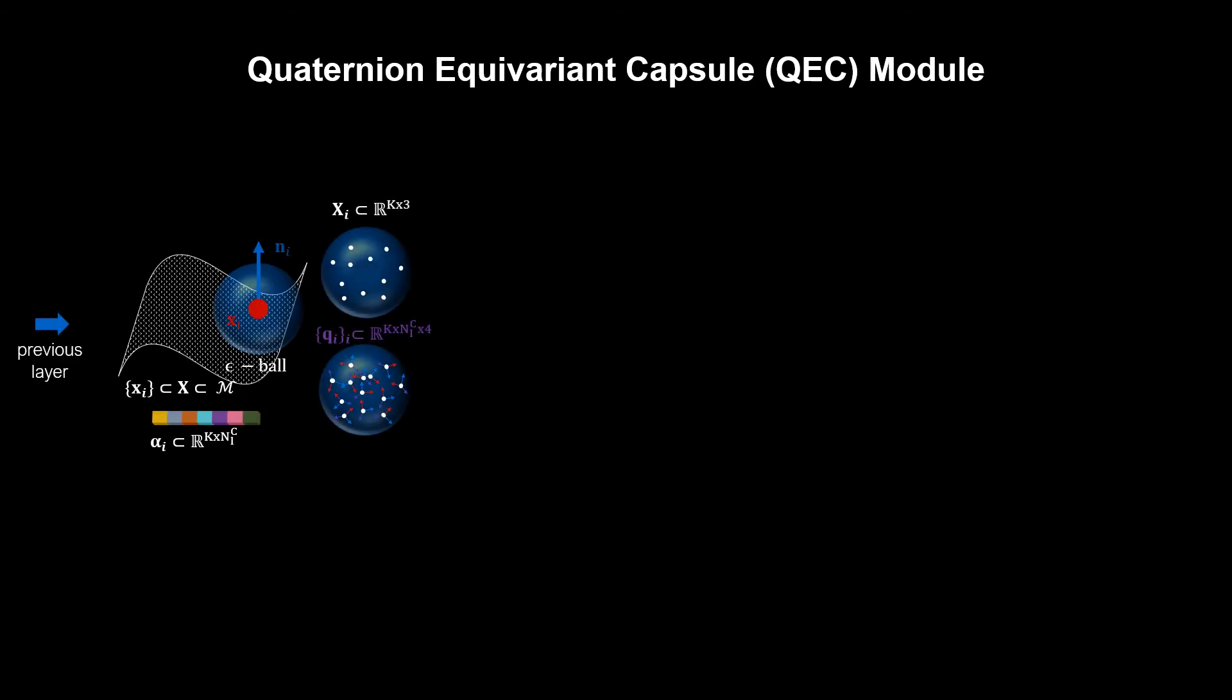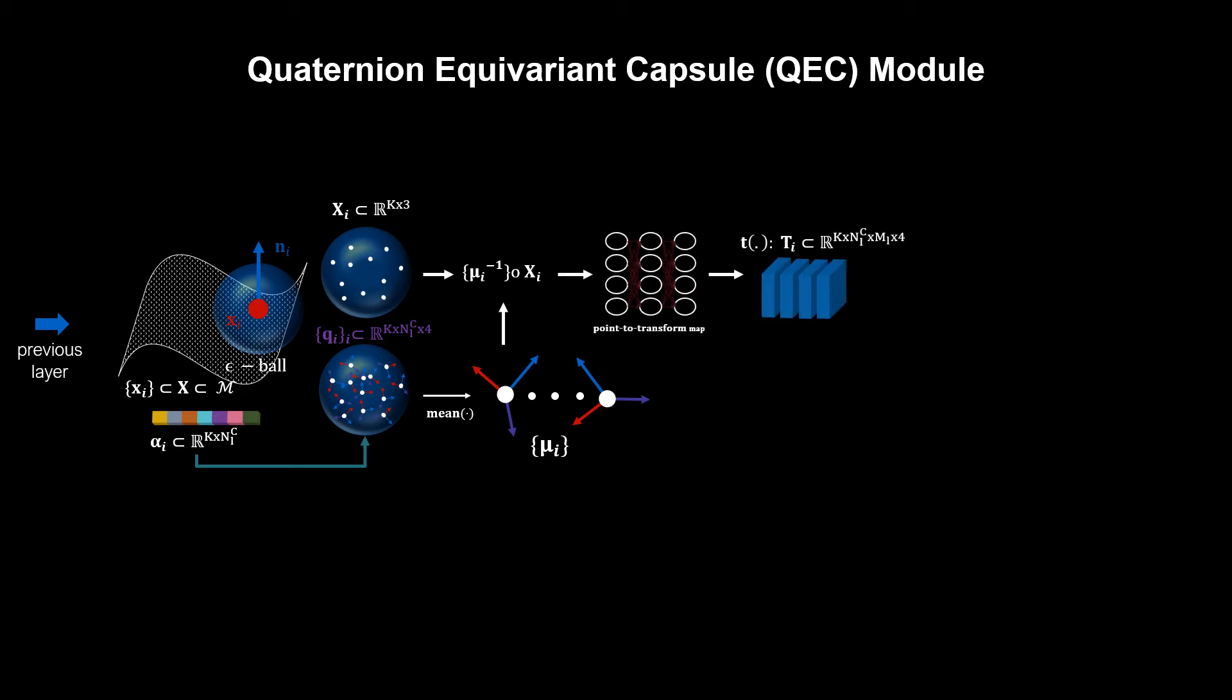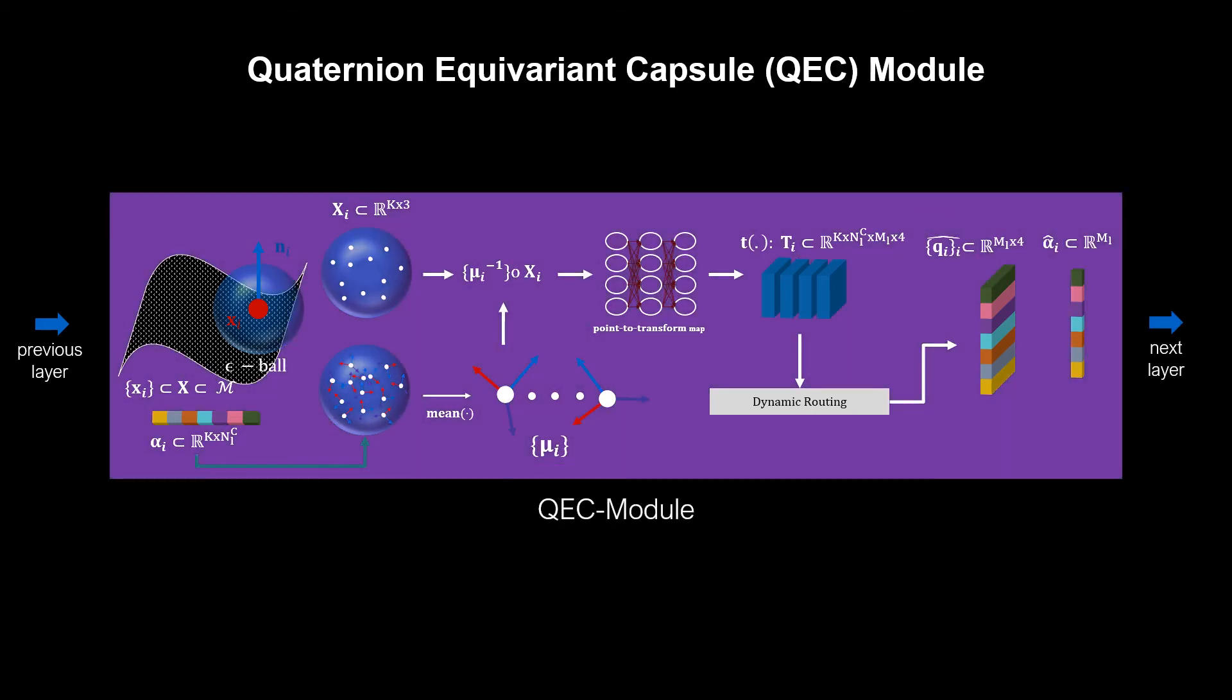Our quaternion-equivariant capsule layer takes as input the 3D points and activations from the previous layer. We then compute the mean of the frames in a channel-wise fashion and use them to canonicalize the local point set. We then use a continuous convolution to regress a set of votes in form of transformations. Note that, unlike original capsule networks, our votes are in the quaternion group. We then use our novel geometric dynamic routing to cluster the data into a disentangled structured latent space composed of equivariant and invariant components.